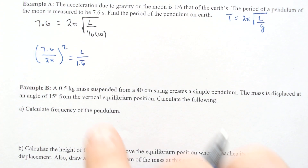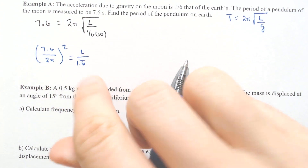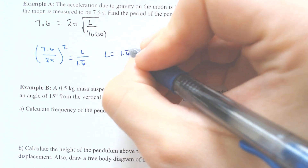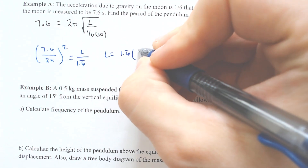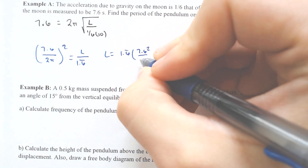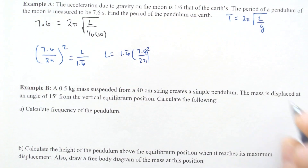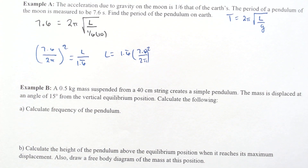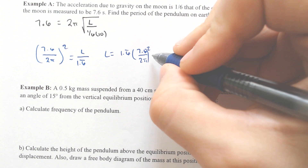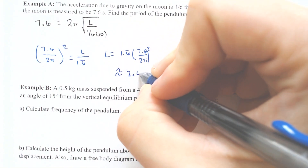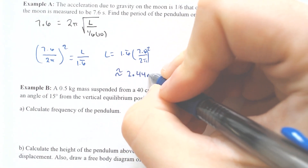We square this and multiply by 1.6 repeating: 1.6 repeating times 7.6 squared divided by two pi — all of that gives us a length of approximately 2.44 meters.